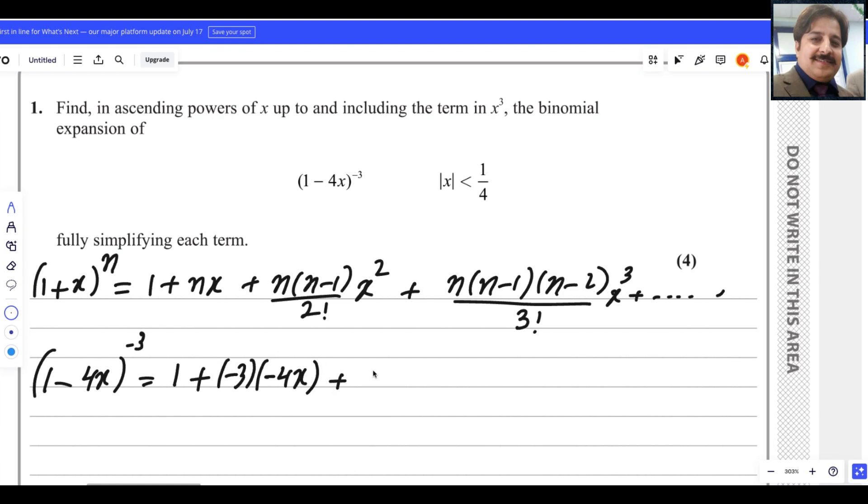Then n(n-1) means -3 and -4, divide by 2!, and this will be (-4x)² times n(n-1)(n-2), so it will be (-3)(-4)(-5) divided by 3! and here (-4x)³ plus it continues.